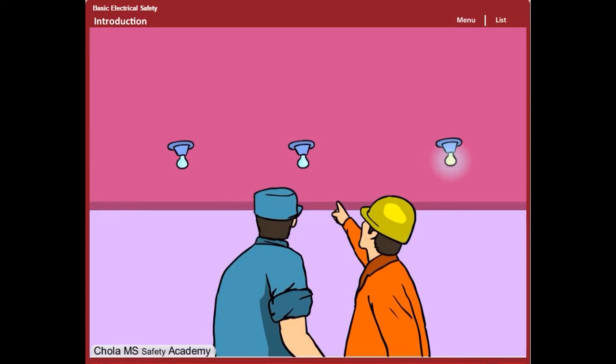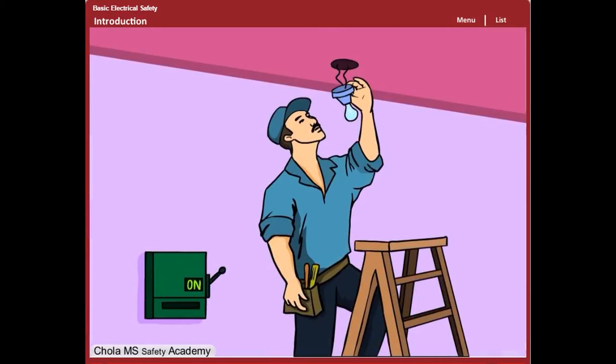He examined the circuit in the problem area. He did not shut off the power at the circuit breaker panel and did not test the wires to check if they were live. He was electrocuted when he grabbed the two live wires with his hand.